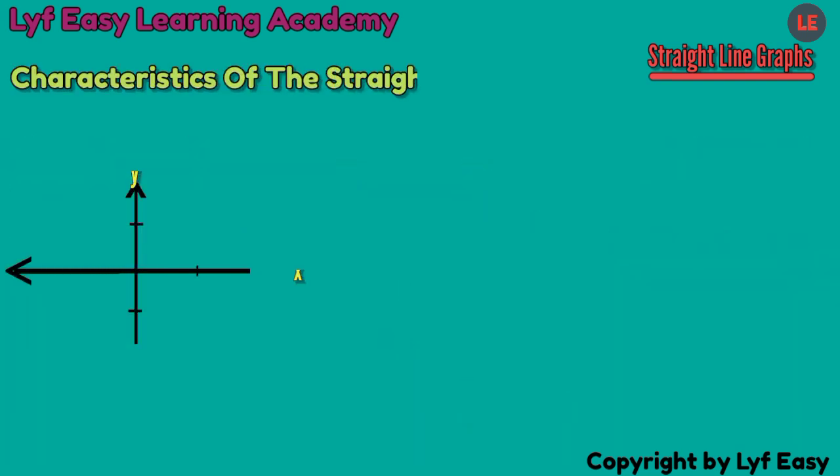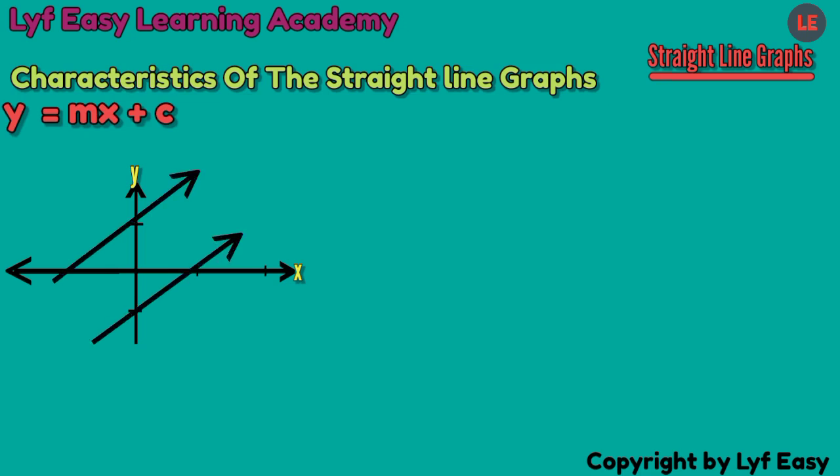Let us see how the straight line graphs can be characterized. Now we bring back this gradient y-intercept formula. If there are two straight lines which are parallel to each other, let us represent the first line by this equation, and other line by this equation.